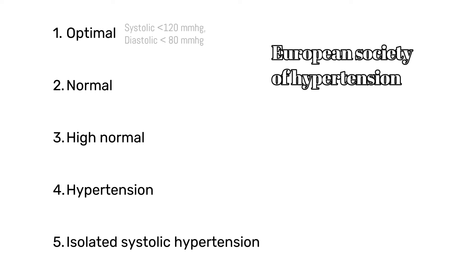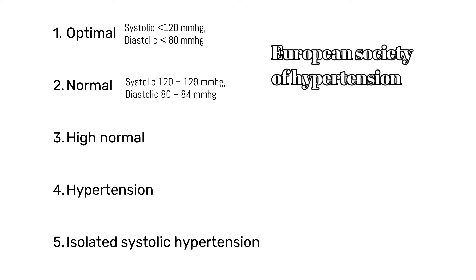According to the European Society of Hypertension, when your systolic blood pressure is below 120 millimeters of mercury and diastolic blood pressure is below 80 millimeters of mercury, they call it optimal blood pressure. When systolic blood pressure ranges from 120 to 129 millimeters of mercury and diastolic blood pressure ranges from 80 to 84 millimeters of mercury, it is called normal blood pressure.